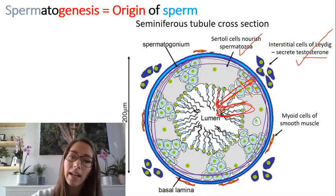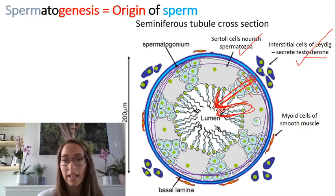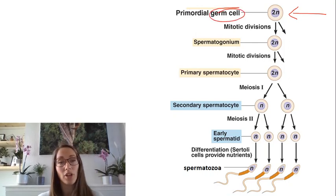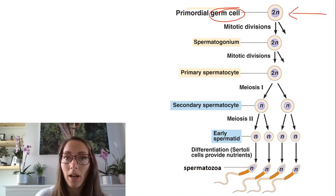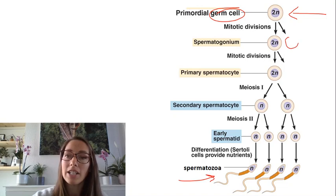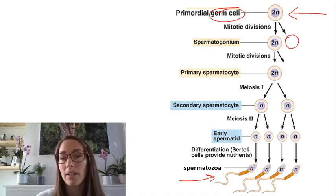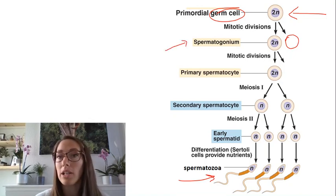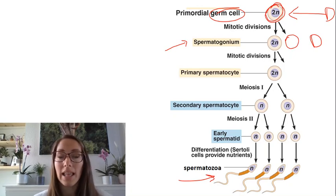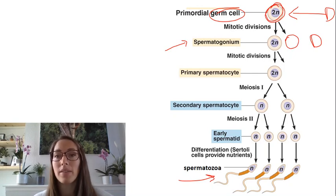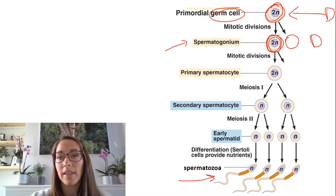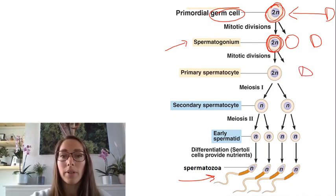Let's look at this process from the outside of the seminiferous tubule into the centre. We start with primordial germ cells — stem cells that will ultimately become differentiated into spermatozoa. The primordial germ cells divide by mitosis to produce a type of cell called a spermatogonium. Both of these cells are diploid, indicated by 2N. In humans we have 23 homologous pairs, 46 chromosomes in total. The spermatogonium also divides by mitosis into another diploid cell called the primary spermatocyte.